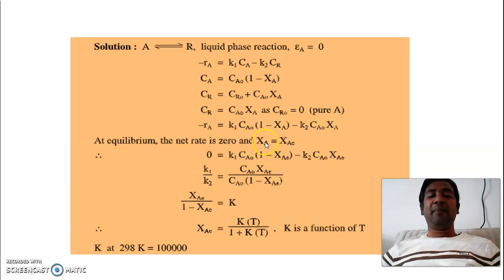At equilibrium, net rate is 0 and X_A is X_AE. From this you can get this equation: X_AE upon 1 minus X_AE is equal to K. So K will be converted in terms of X_A, or X_A can be converted into K.